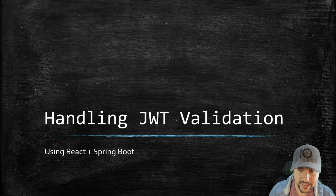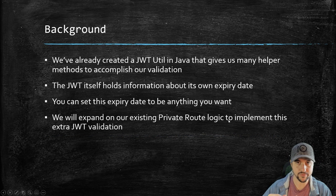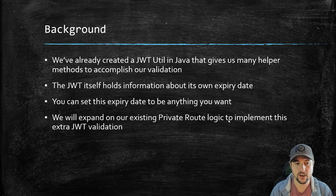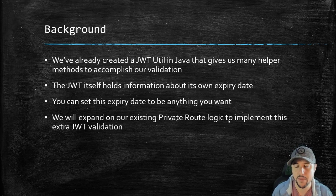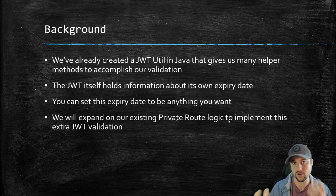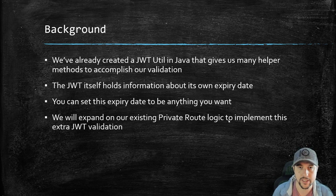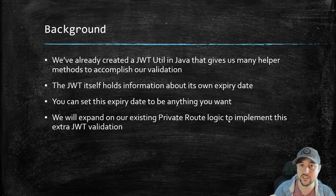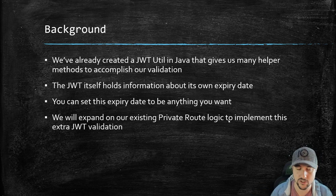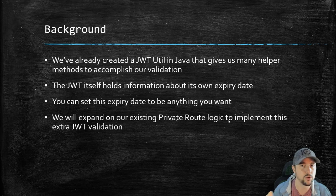Let's get back to it. When we dive into this project, I want to give you a bit of background first. We've already created something called the JWT util in Java — it's just a class that gives us many helper methods that allow us to check if our token is expired and so on. The JSON Web Token itself holds information about its own expiry date. You can set this expiry date to be anything you want — almost infinite days or just seconds. In our application, we had it set to be valid for about a week or so.